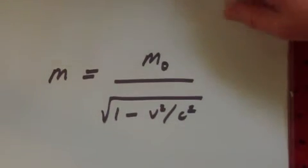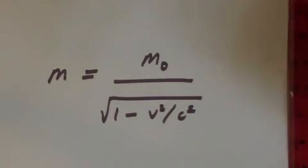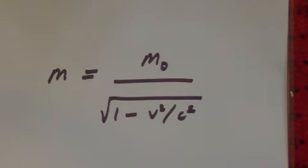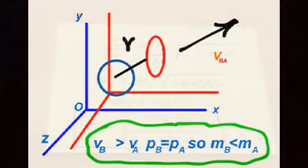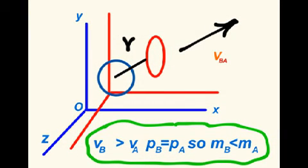Although this is often referred to as the relativistic mass equation, in later years Einstein was opposed to the idea of relativistic mass. He preferred to call it the momentum multiplied by the Lorentz factor.